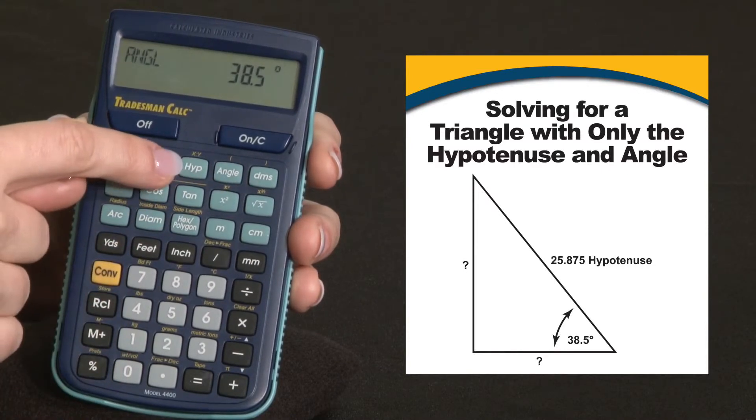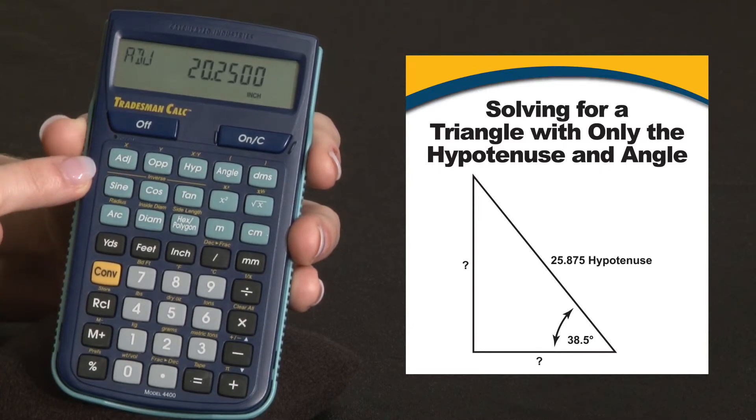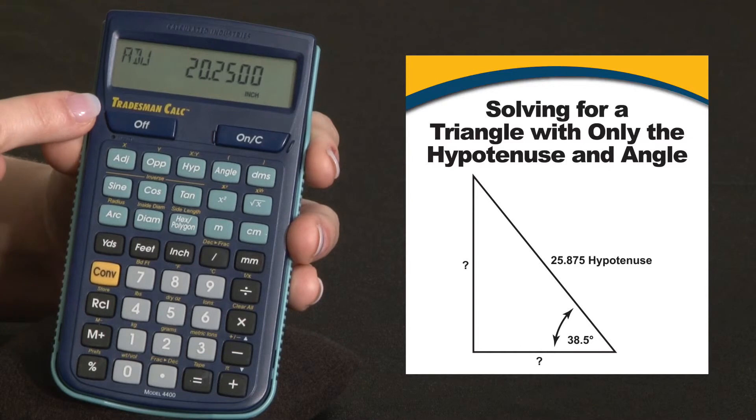Just press opposite to solve for the opposite leg, and adjacent for the adjacent leg. And your right triangles are solved.